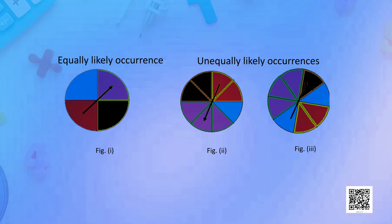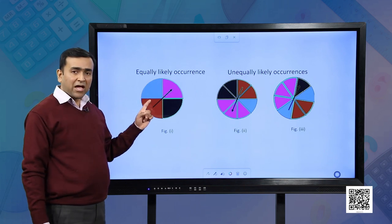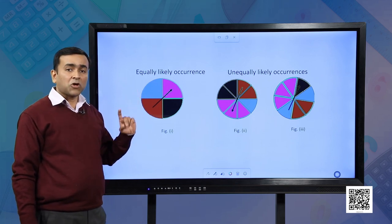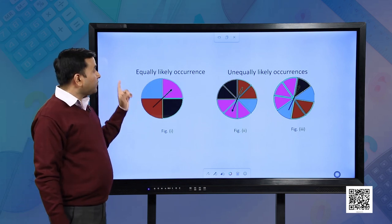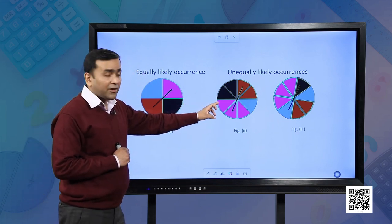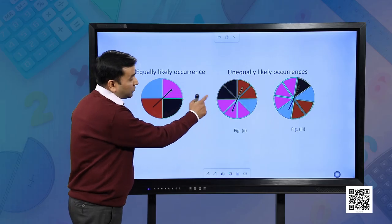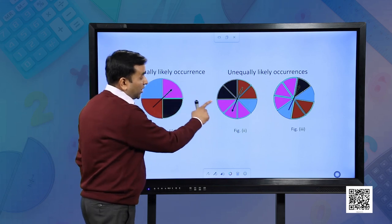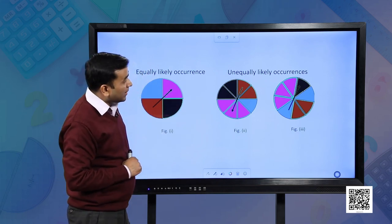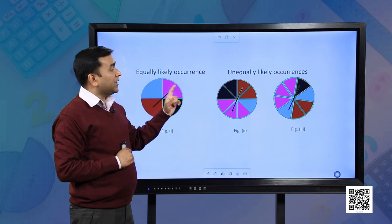Let us understand the concept of equally likely events with the help of an example. Suppose we have a circle divided into four equal parts, each having a different color. If we spin the arrow, it has an equal chance of stopping at either of the colors — this is an example of equally likely occurrence. In figures 2 and 3, there is a greater portion of purple color and very little blue color, so the arrow has a greater chance of stopping at purple and a very less chance of stopping at blue. Similarly, in figure 3, the arrow has a very less chance of stopping at black color — so this is an example of non-equally likely occurrences.